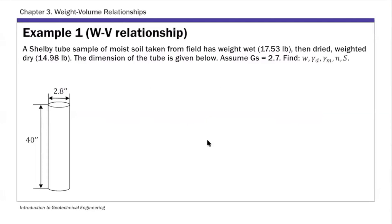This is example one - a Shelby tube example. So we watched that short video. This is a Shelby tube sample and we know the weight of the moist soil is 17.53, and then we dried and weighed the dry soil which is 14.98. For the Shelby tube you know the dimensions: this particular Shelby tube is 40 times 2.8 inch and 40 inches long. There are different sizes but for this one it is 40 times 2.8.